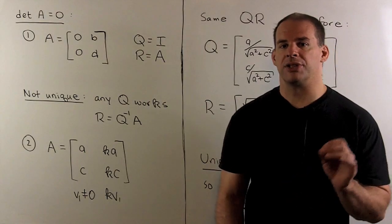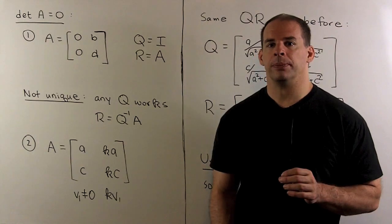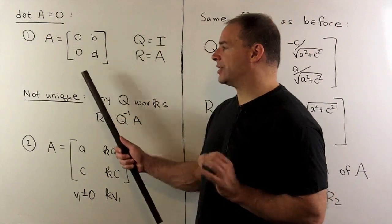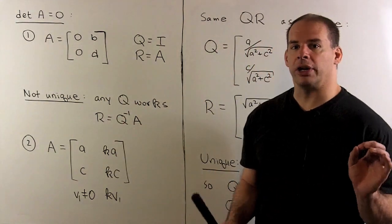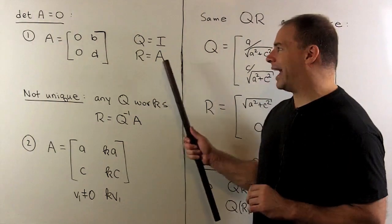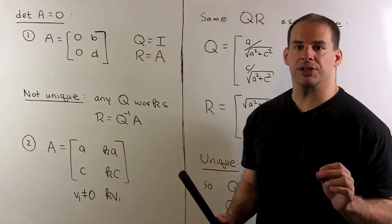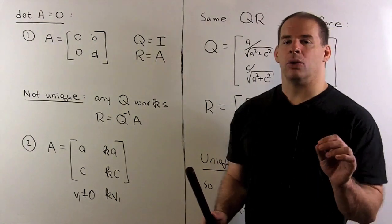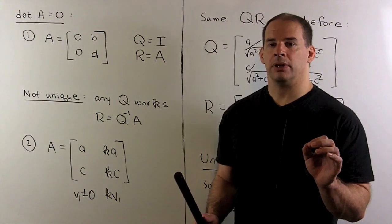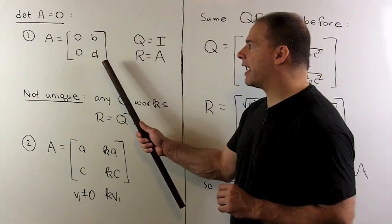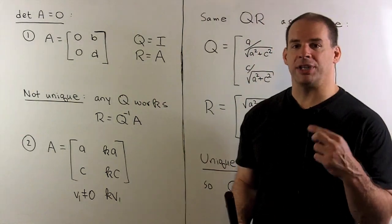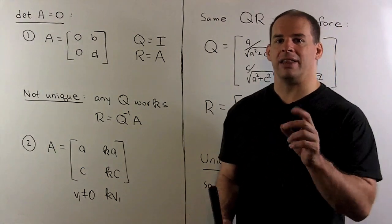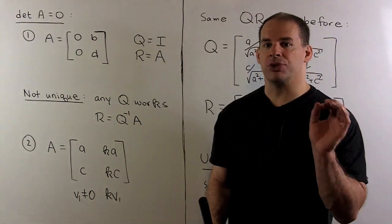Finally, let's consider when the determinant of A equals 0. We'll have two cases. In the first case, we assume the first column of A is exactly 0. Here, A is already in upper triangular form, so we let R equal A and Q equal the identity matrix. This factorization is not unique — in fact we can have a factorization with any Q we like. The idea is to take our second column vector, rotate it through an angle to get R, and rotate in the opposite direction for Q, giving A equals Q times R.